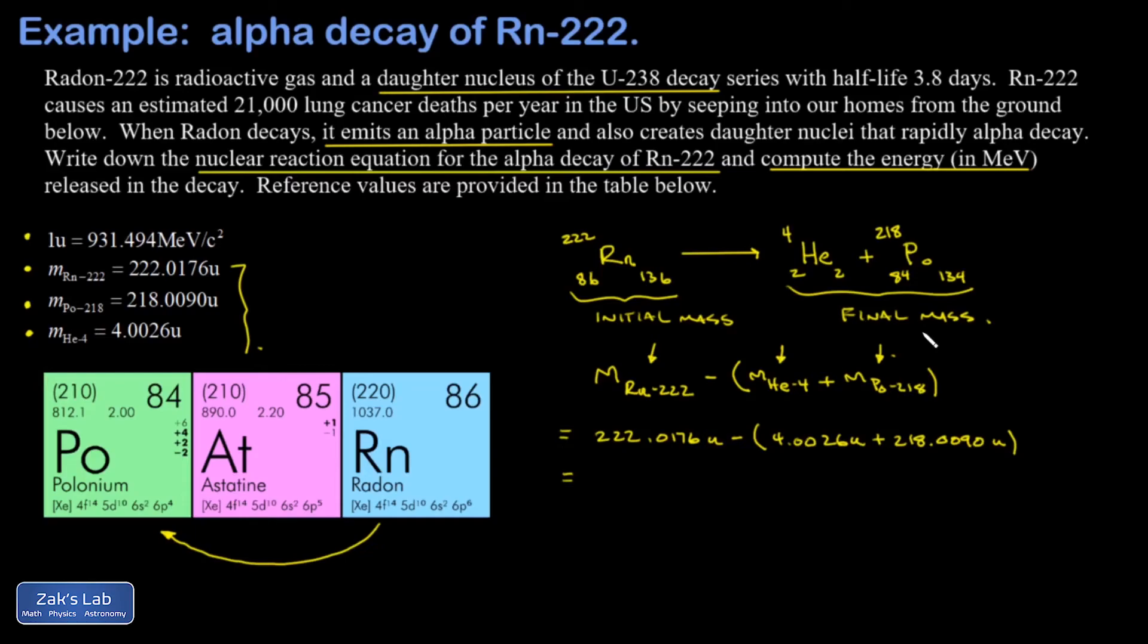The missing mass here really is a reduction in the mass of the nuclei. I end up with a reduction in mass of 0.006 atomic mass units. I convert that to MeV per c squared and I get 5.59 MeV per c squared.